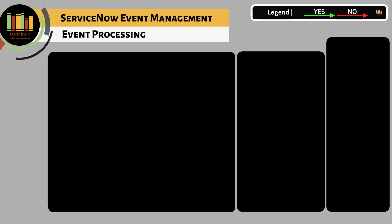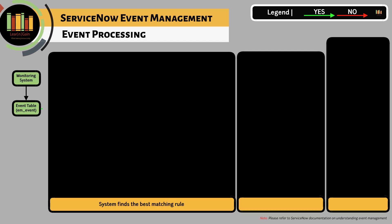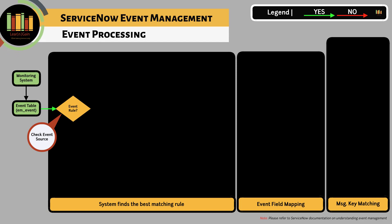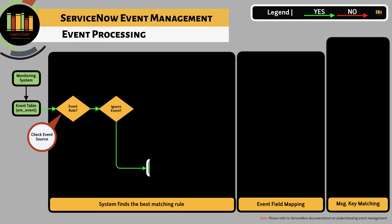Let's do a deep dive on how events are processed. When an event record is created in the event table, the system checks for an existing event rule. The first thing the system checks is the source of the event. If the source matches the source in an existing rule, then a rule is matched. A rule is also matched if additional filters match. Event rules need to have filter conditions specified — rules without filter conditions will be ignored.